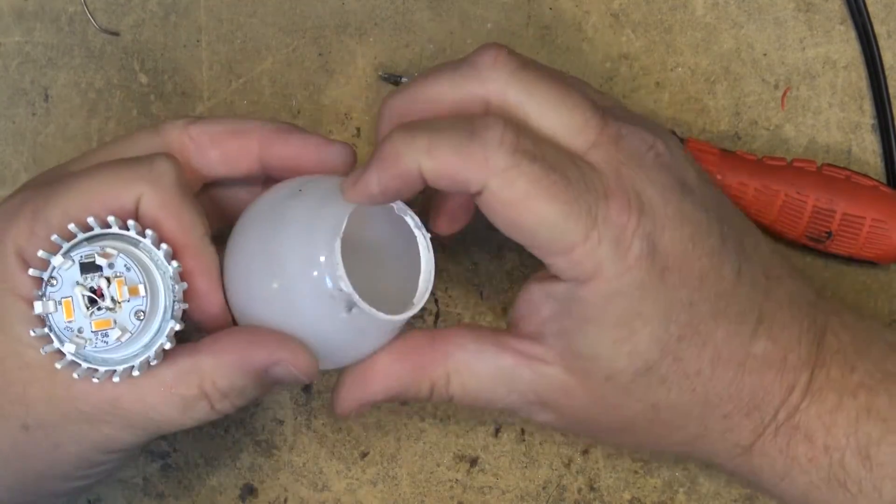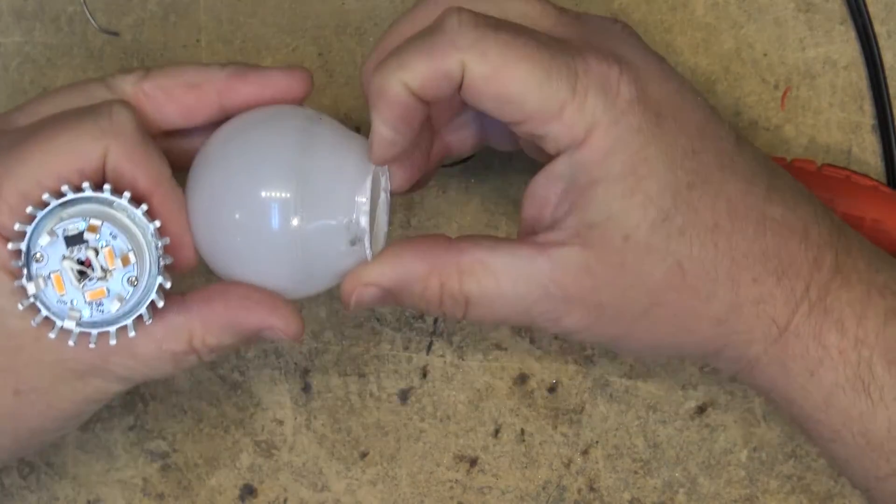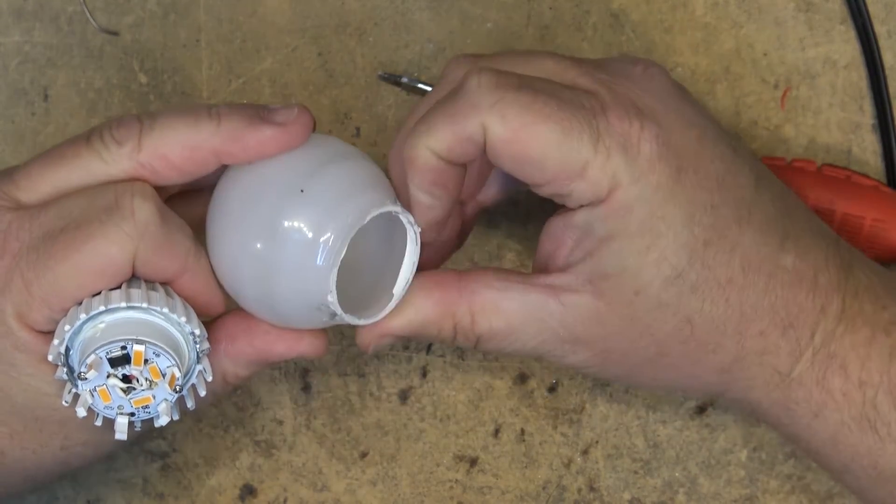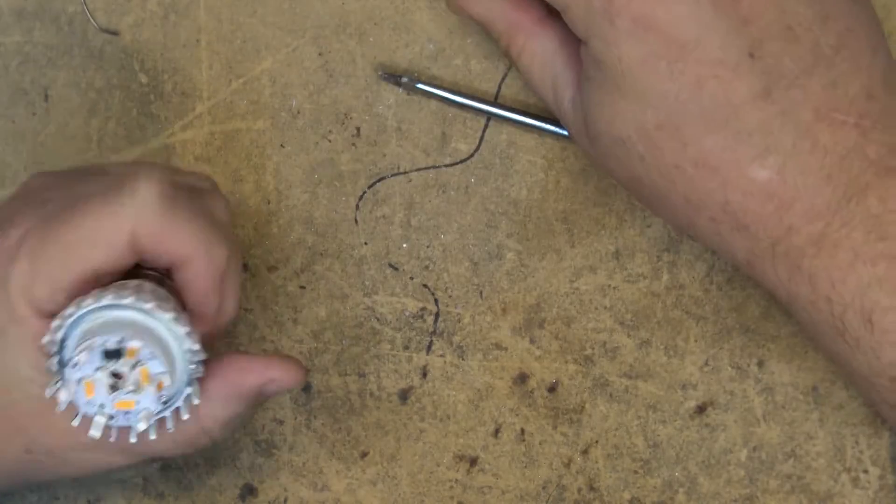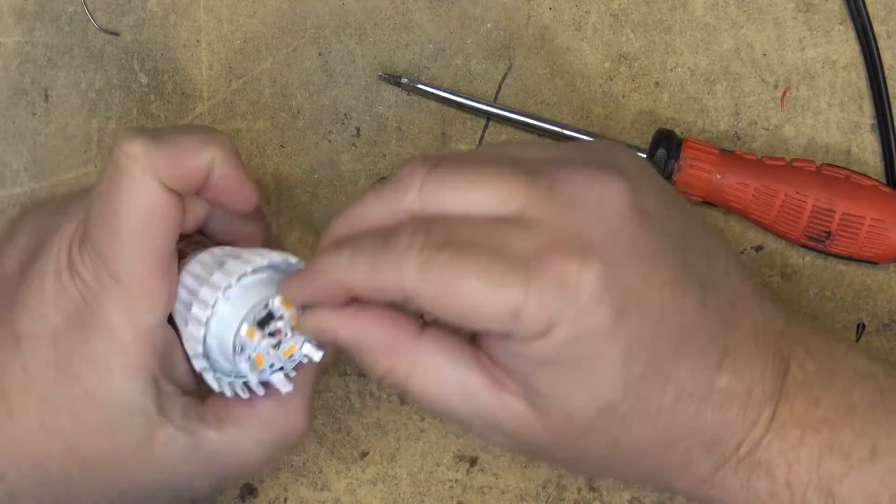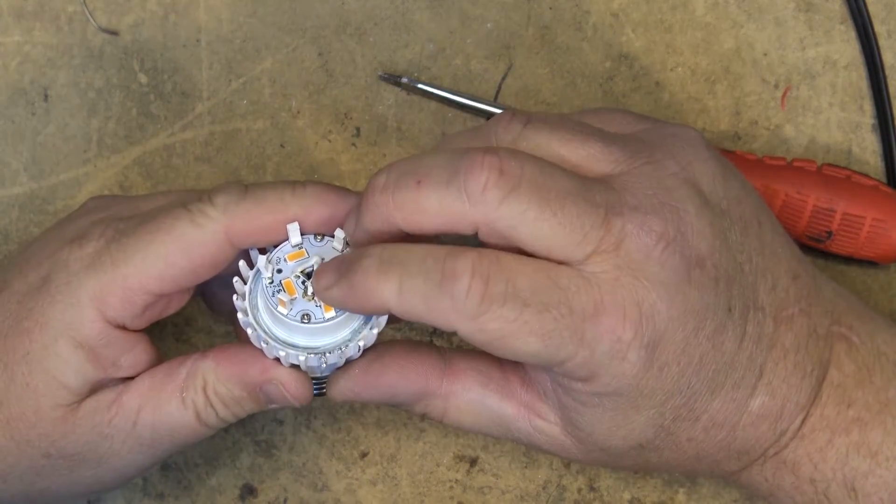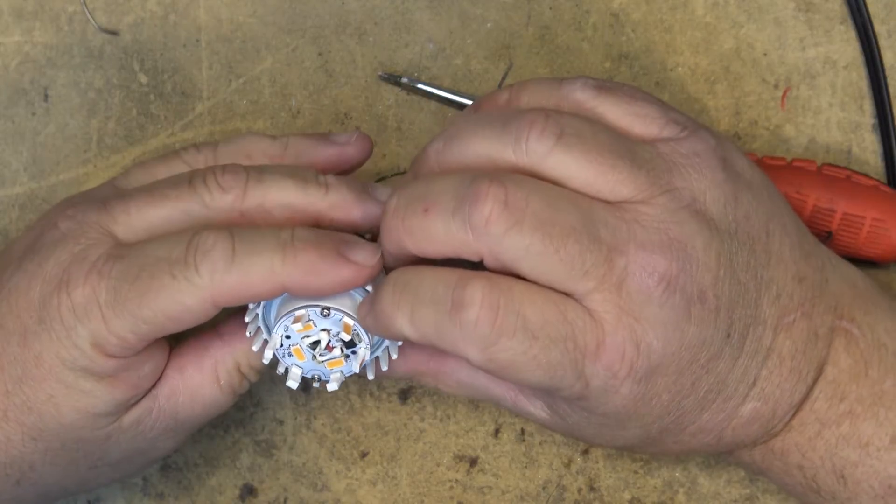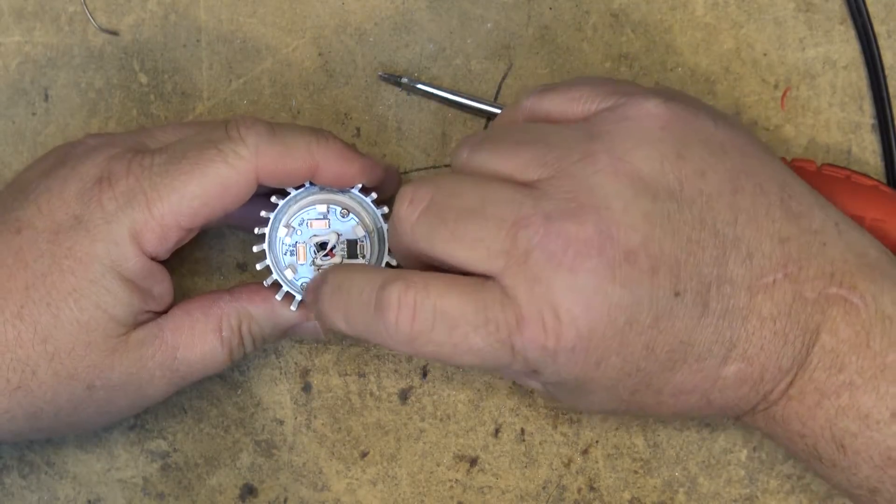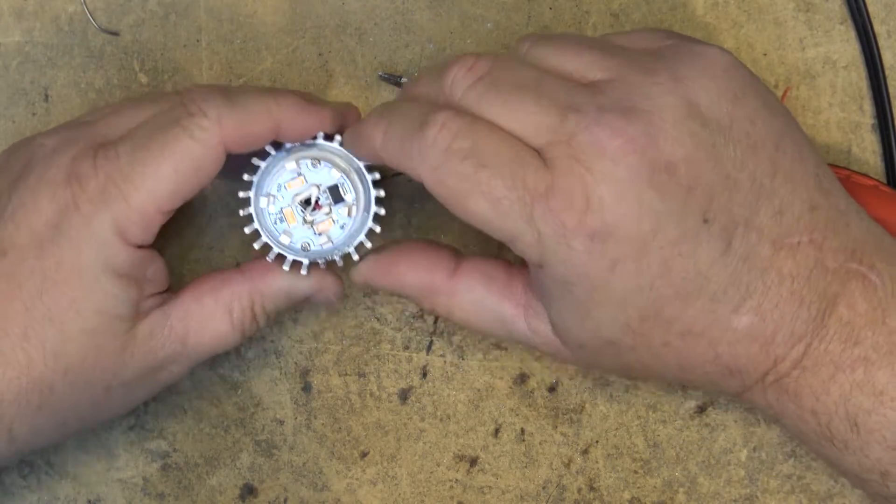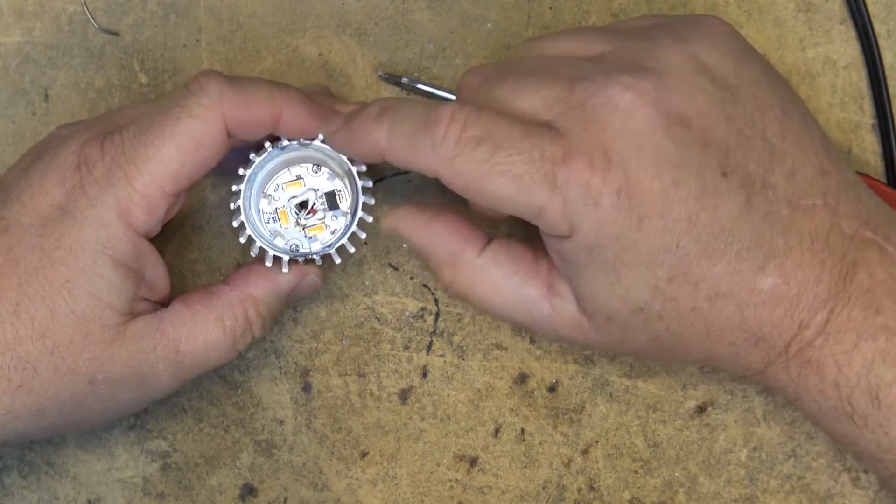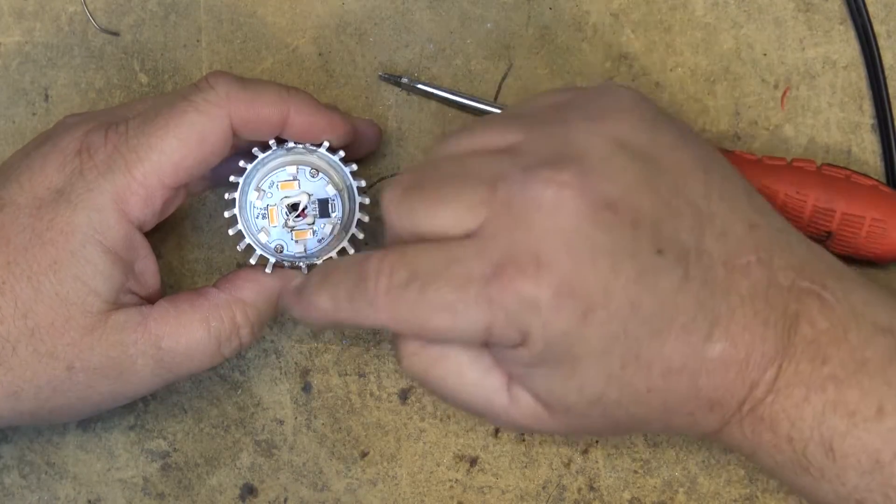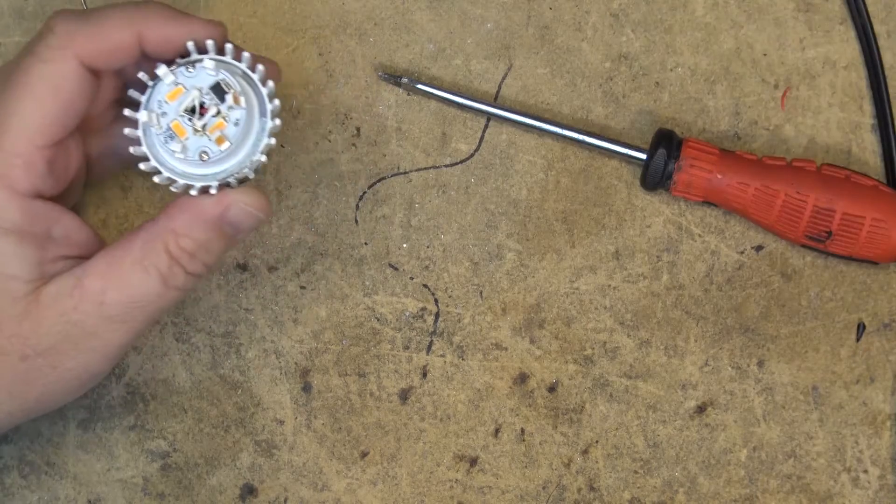Besides gluing it, they actually have a plastic ridge around here. As you can see, this light has one, two, three, four, five, six, seven, eight. We've got nine light dies in here. We've got six of them around the outside and three facing straight up.